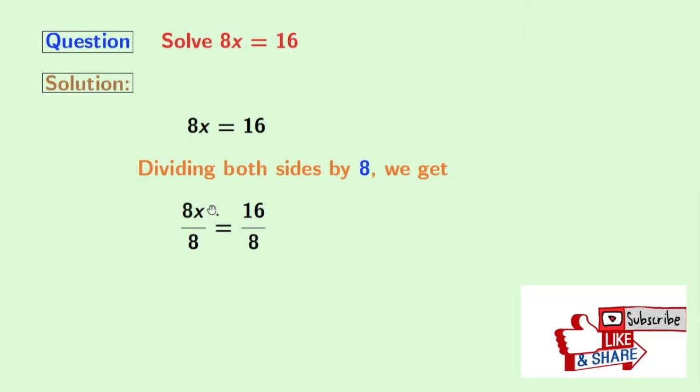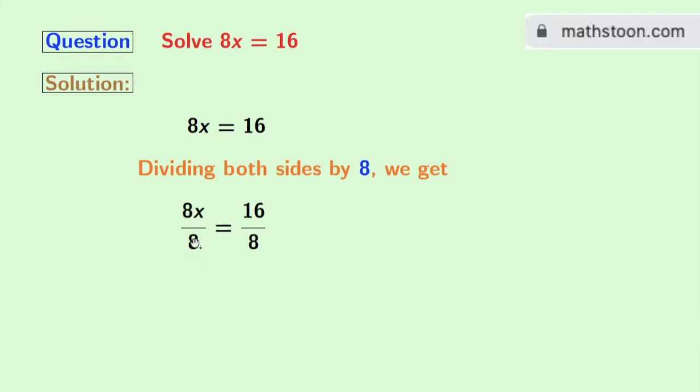Look, on the left-hand side, we have 8 in both the numerator and denominator, so it gets cancelled and we are left with x. On the right-hand side, we have 16 divided by 8, which equals 2. So finally, we get x equals 2 as our answer.